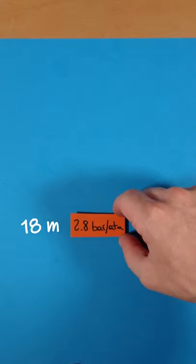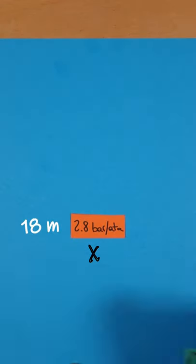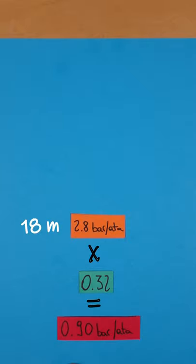The partial pressure of the oxygen in our mixture at 18 meters will be equal to 2.8 bar times 0.32, which is equal to 0.90 bar.